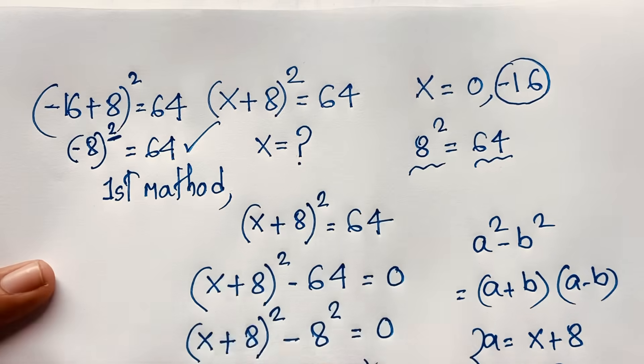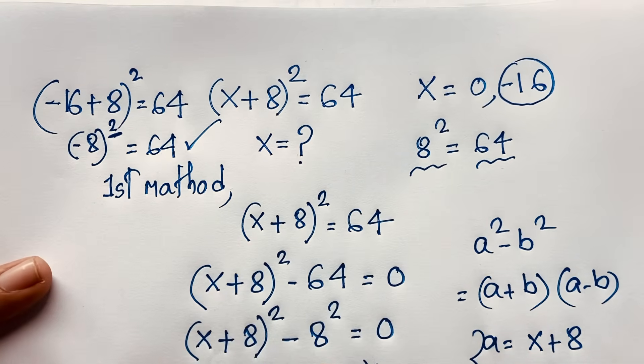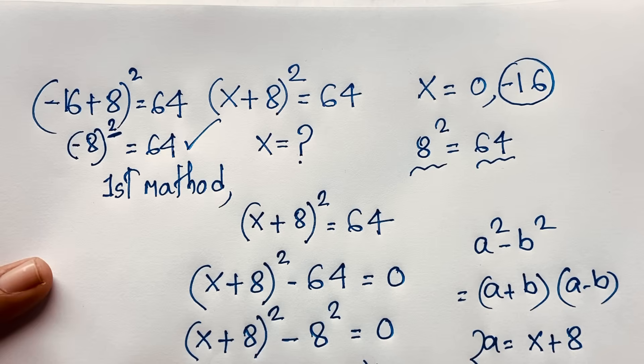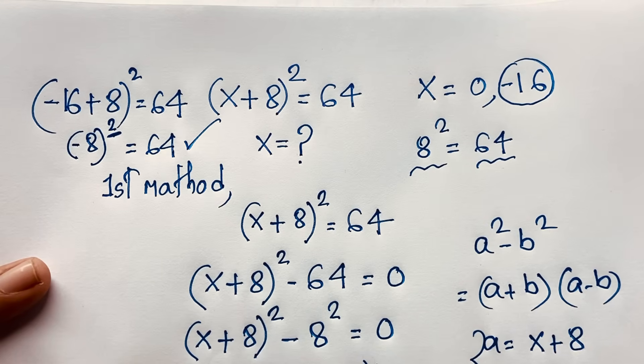Left-hand side and right-hand side — both sides — are equal. Thank you all. If you enjoyed this math Olympiad question, please subscribe to my channel for more interesting videos. Goodbye, take care.